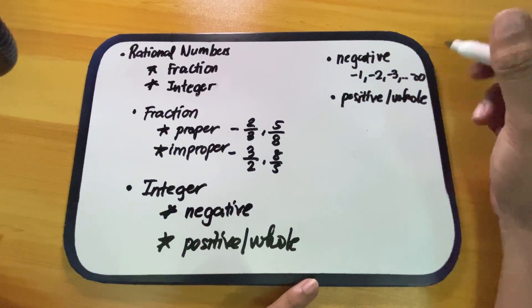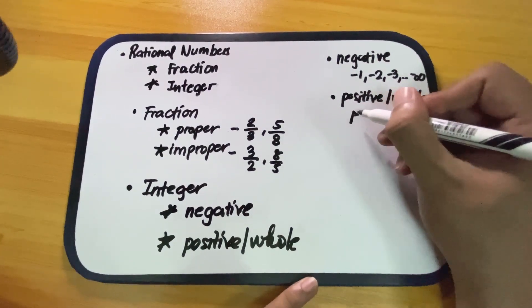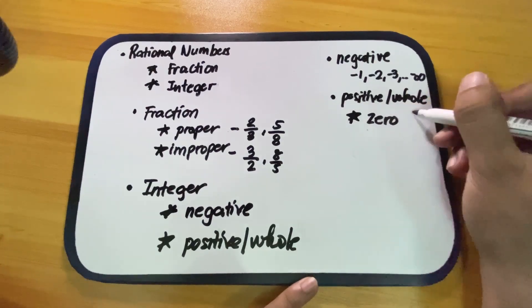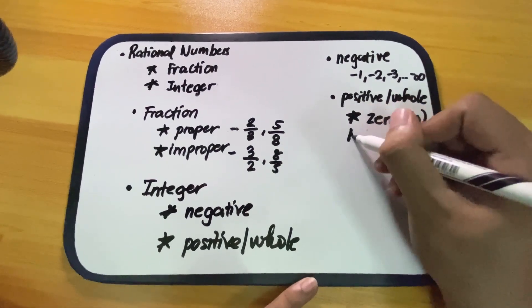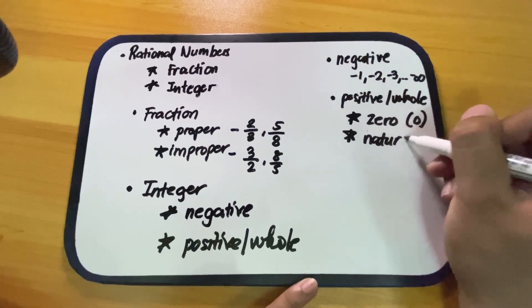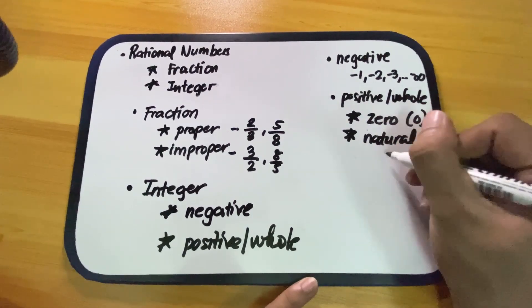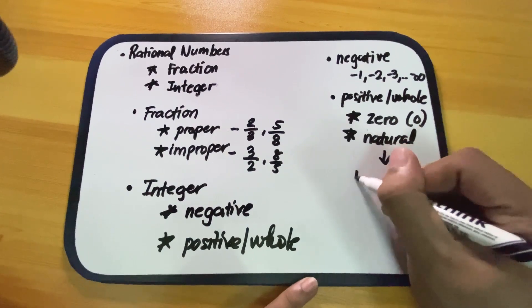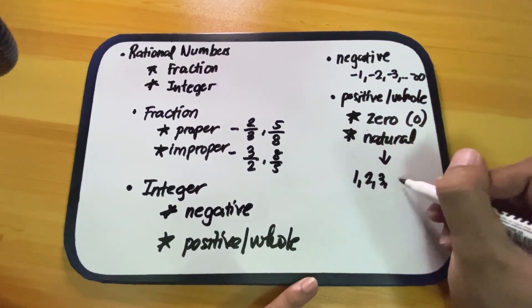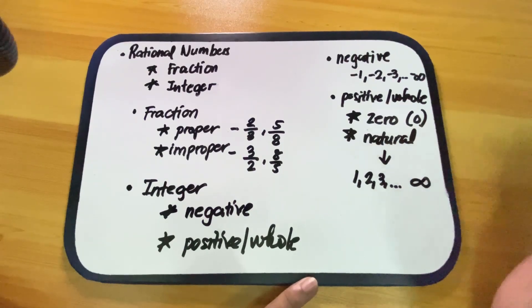Positive or whole numbers are divided into two groups: zero, and natural numbers. Natural numbers include 1, 2, 3, until positive infinity.